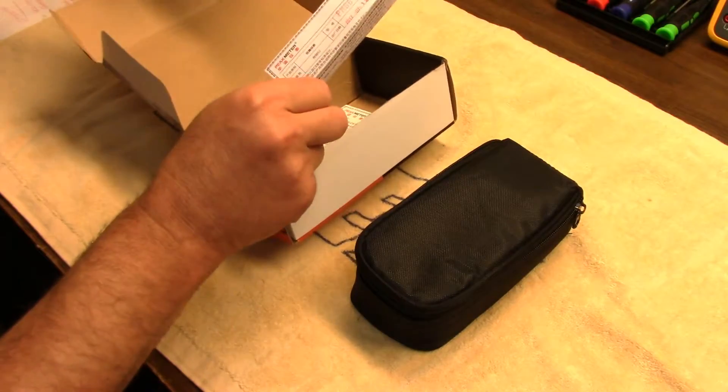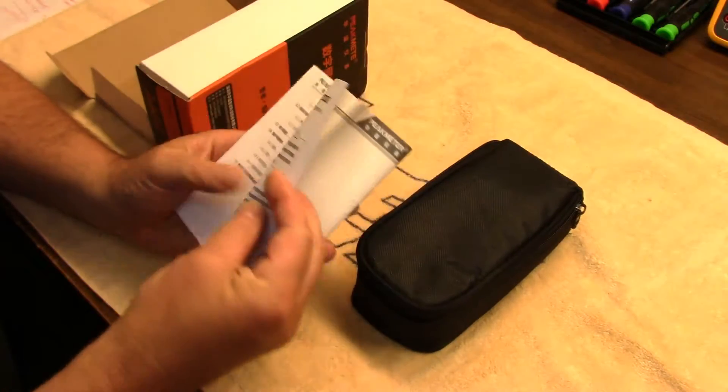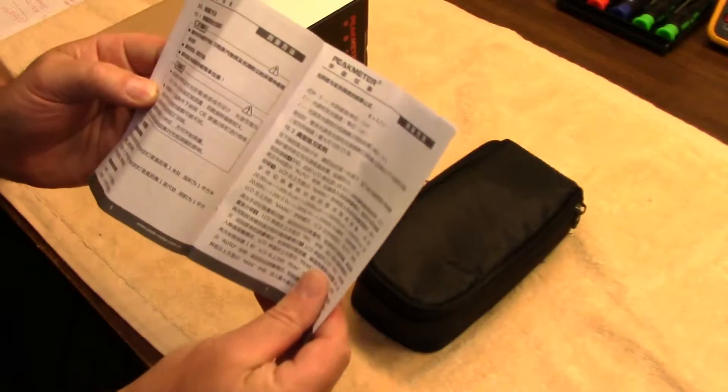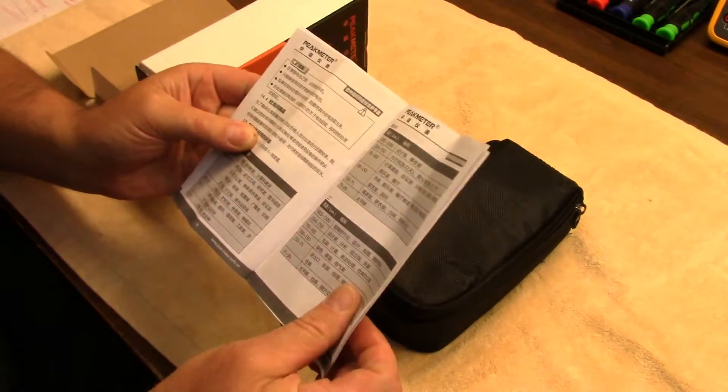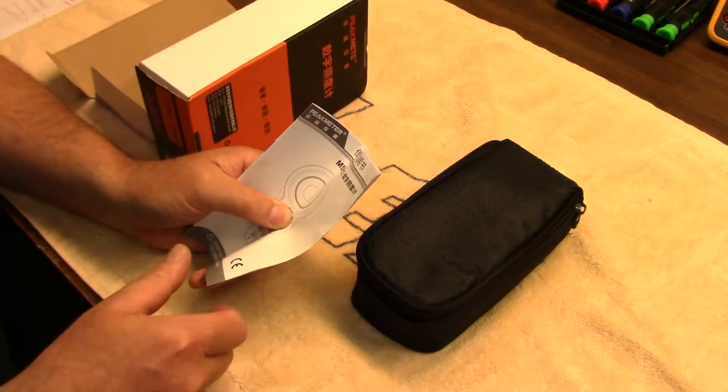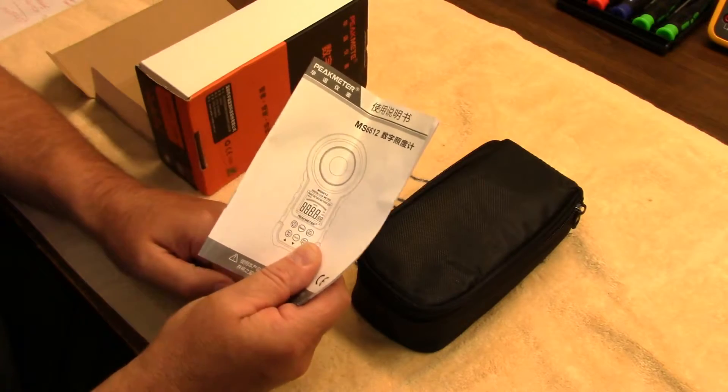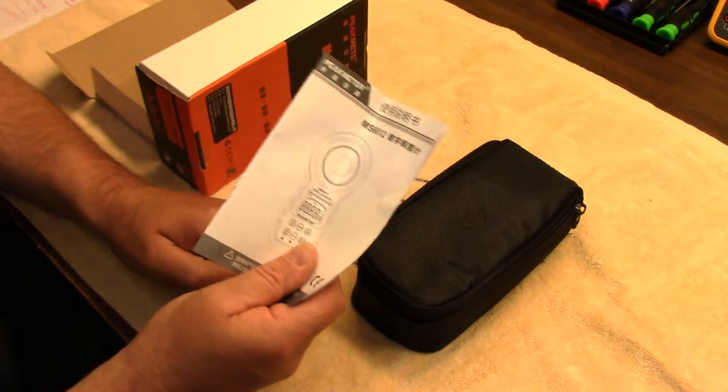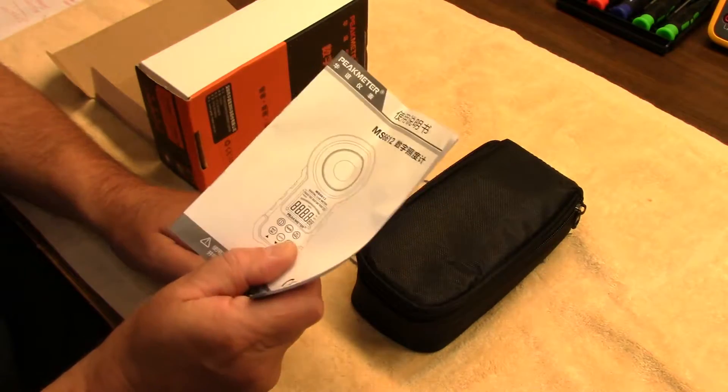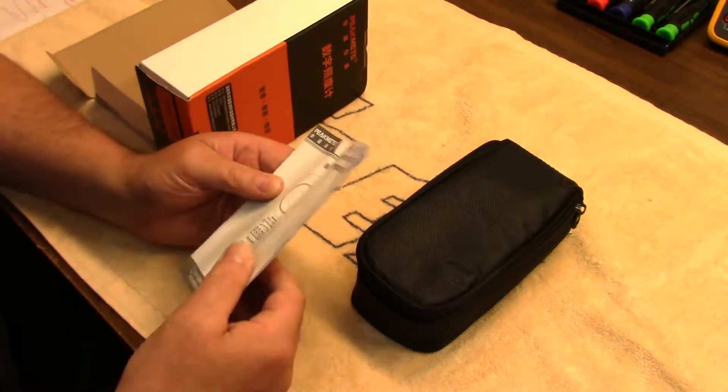The instruction book or manual that comes with it is unfortunately not in English, at least with this one. Maybe others do, but I'm going to link right here below in the description to Peak meter's site, the product page for this, so you can look at it and actually download the English instructions. I always like downloading the instructions or at least reading them before I purchase something.